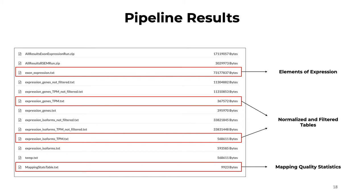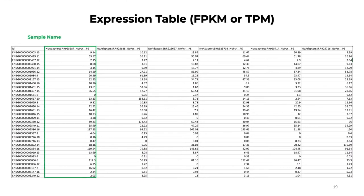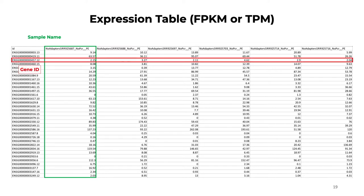One of the next challenges when we complete the pipeline is to open one of these files in Excel, R, or Python. The expression table is a tab-delimited TXT file that includes columns annotated in the header, which is the first row providing sample names. Those sample names will typically be transformed to remind us of what processing steps were done. For example, you can see additional words like no-adapters, no-PCR, and PE added to the name. No-adapters and no-PCR mean they were processed with pre-processing steps PCR-Clean and Trimmomatic. PE stands for paired-end reads.